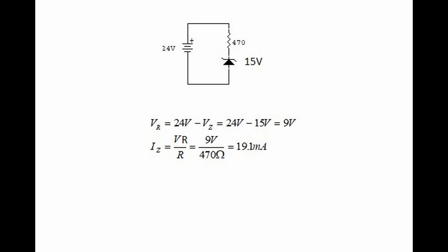Zener diodes are designed to go in reverse, and for each zener diode there is a unique value — it could be 3.1, 5.1, 9.1; in this case it's 15 volts.